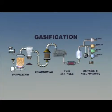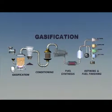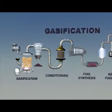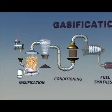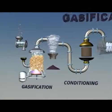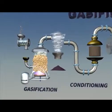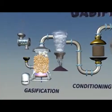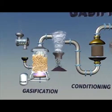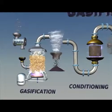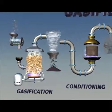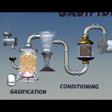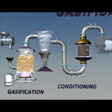In the thermochemical gasification process, biomass is added to a reactor and heated to temperatures over 800 degrees Celsius to drive off gases and vapors in the form of tars and syngas, which is a mixture of hydrogen and carbon monoxide.